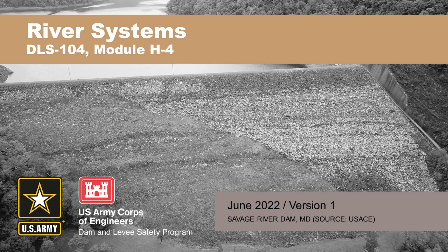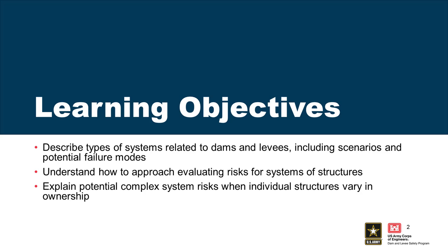I'm going to talk about systems risk. We've talked a lot this week about evaluating single structures, single dams, single levees. But what about when we have systems? Dams and levees rarely operate on an individual basis. Our objectives here are to describe the types of systems related to dams and levees, including scenarios and potential failure modes, understand how we approach evaluating system risks, and explain potential complex system risks when individual structures may vary in ownership.